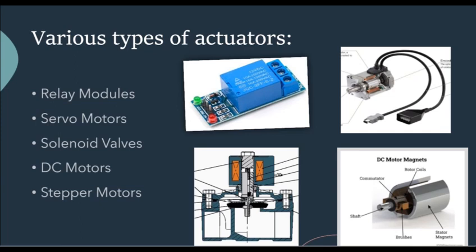DC motors are used in home automation for tasks such as opening and closing curtains, blinds and windows, as well as controlling the movement of robotic appliances and smart locks. Stepper motors are also used for precise control of movements such as opening and closing blinds or curtains, and for positioning mechanisms in devices like 3D printers and automated doors.